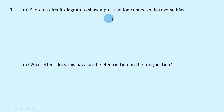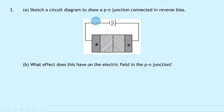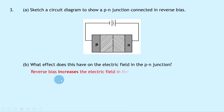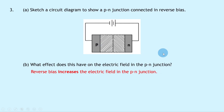Question 3a says to sketch a circuit diagram to show a PN junction connected in reverse bias — just the opposite to question 2. In reverse bias mode, the negative terminal is connected to the P-type and the positive terminal to the N-type, i.e. the terminals are swapped from question 2. The depletion region is now much larger than in forward bias. Part B asks what effect this has on the electric field: reverse bias increases the electric field. The electrons in the N-type are attracted to the positive terminal, and the holes in the P-type are attracted to the negative terminal, so no charge or current can flow — no conduction takes place.